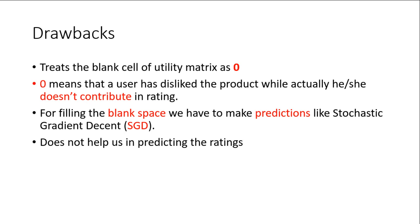For filling the blank space or blank cells of the utility matrix we have to make predictions like stochastic gradient descent. While cosine similarity does not help us in predicting the ratings.